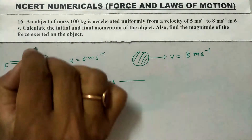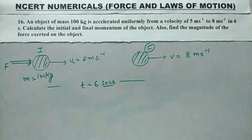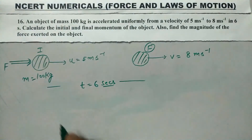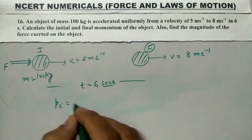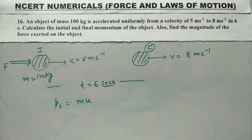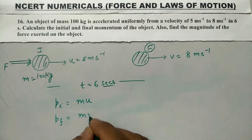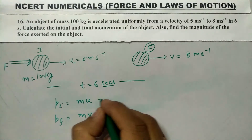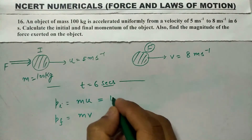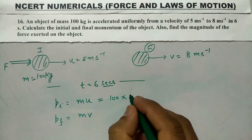अब उसने पूछा है कि initial momentum — यह आपकी initial position थी, यह आपकी final position थी। तो PI जो हमारा होता है, वो M×U के बराबर होगा, और PF जो हमारा है, वो M×V के बराबर होगा। मास यहाँ पर 100 kg है। (Now it asks for initial momentum: PI = M×U, and PF = M×V. Mass is 100 kg.)